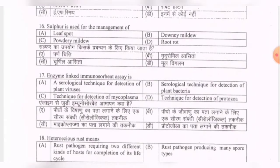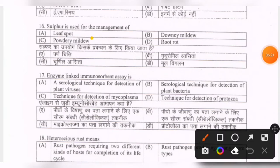Next question: sulphur is used for the management of — options are leaf spot, downy mildew, powdery mildew, root rot. The correct option is C — powdery mildew.